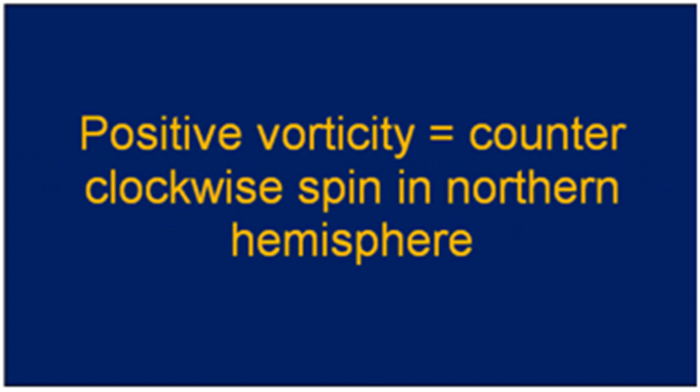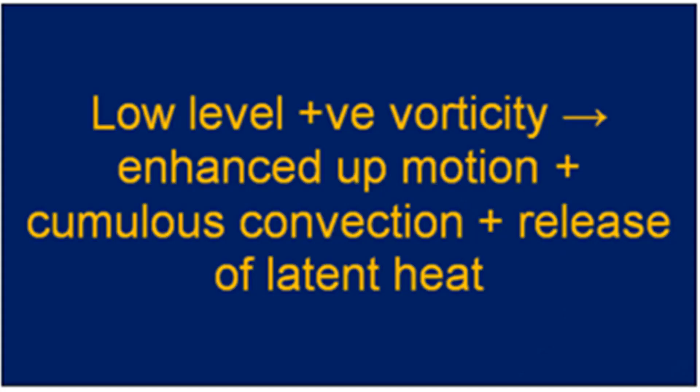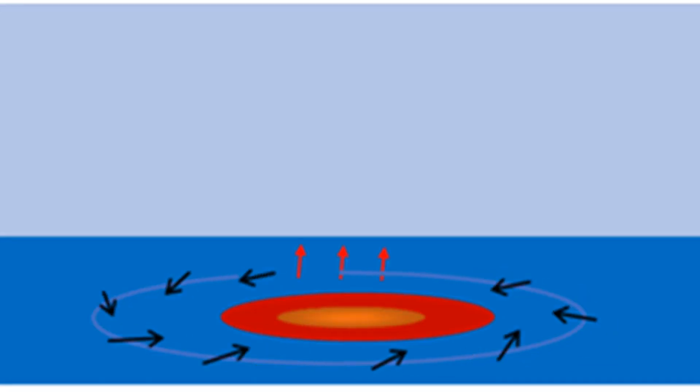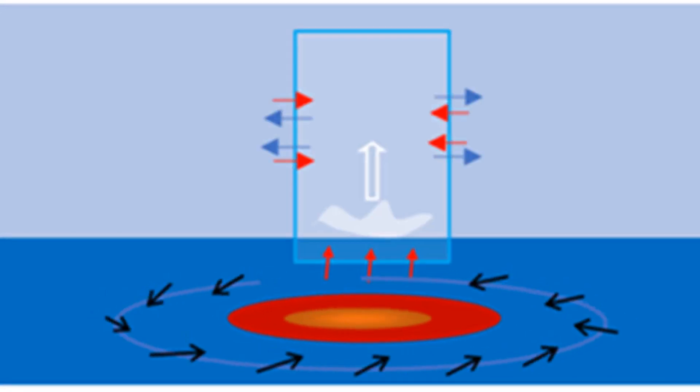Vorticity is any twisting motion in the troposphere. A counter-clockwise spin in the northern hemisphere gives positive vorticity. Regions of low-level positive vorticity are associated with enhanced upward motion, cumulus convection, and release of latent heat. The increased heating leads to increased horizontal convergence, which in turn further increases relative vorticity.